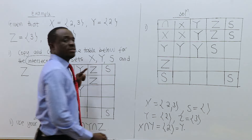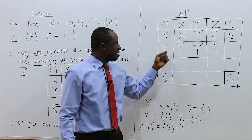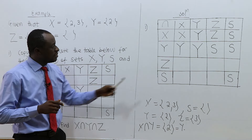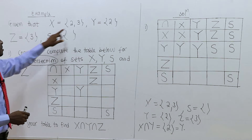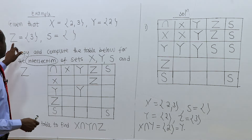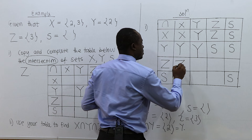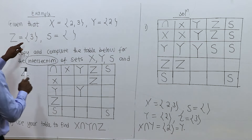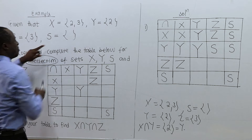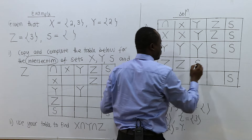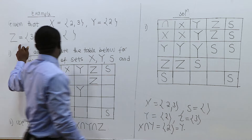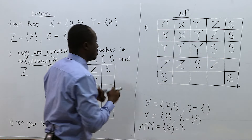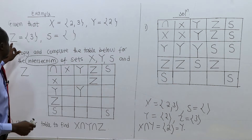The empty set is denoted by S. So Y intersection Z is the empty set, Y intersection S is also the empty set. Z intersection X — the common element is 3, and 3 is the same as Z. So Z intersection X equals Z. Now Z intersection Y — do you have any common element? No common element, same as the empty set, which is S. Z intersection Z is {3}, which is the same as Z.